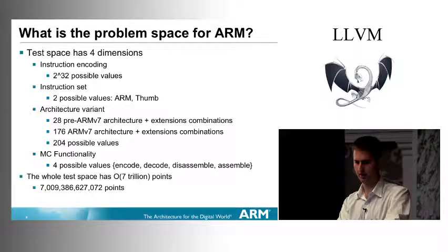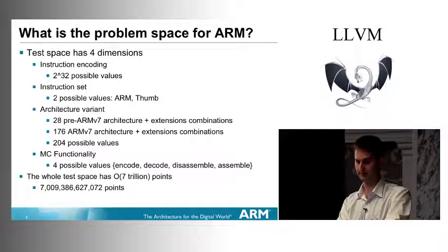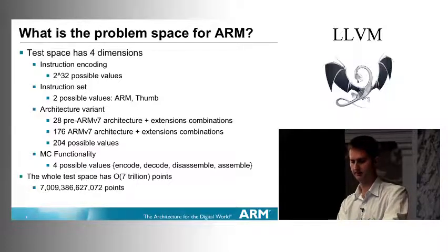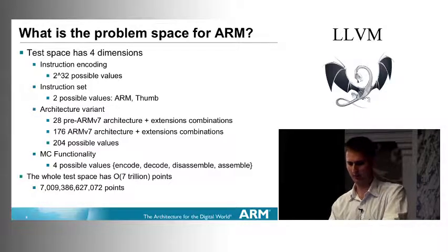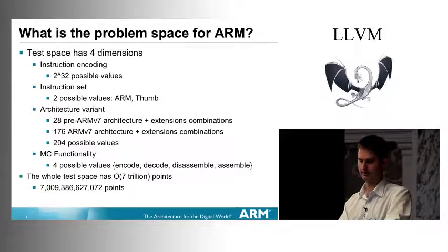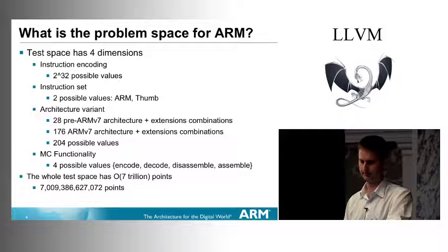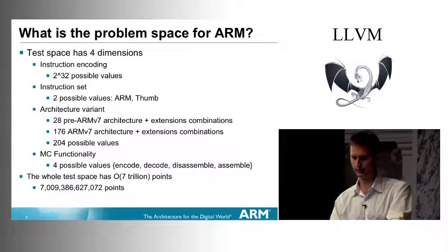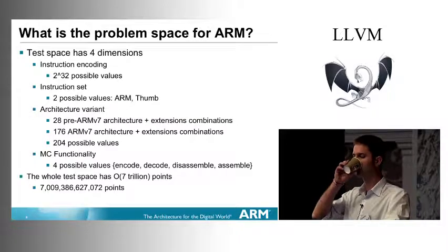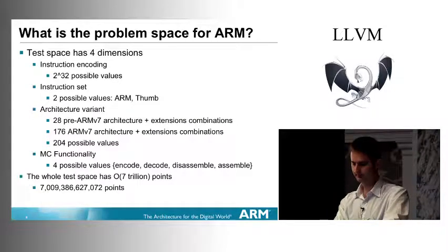The problem space for ARM is quite large. The instruction encoding has 2 to the 32 possible values, the instruction set has 2 options, and the architecture variant is more complicated — there are many optional architecture extensions for ARM adding extra instructions. V7 has 176 combinations, plus previous 7 architectures, giving 204 possible values, with four values for functionality. That's an order of 7 trillion test points.